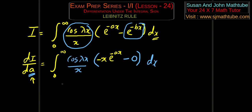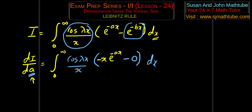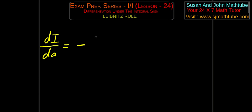I am sure you didn't find much trouble with this step. Cleaning up — once you clean up the whole mess, you get dI/da equal to minus, because I can see this minus, and x and x get cancelled, and we get integral from 0 to infinity of e to the power minus ax cos(λx).